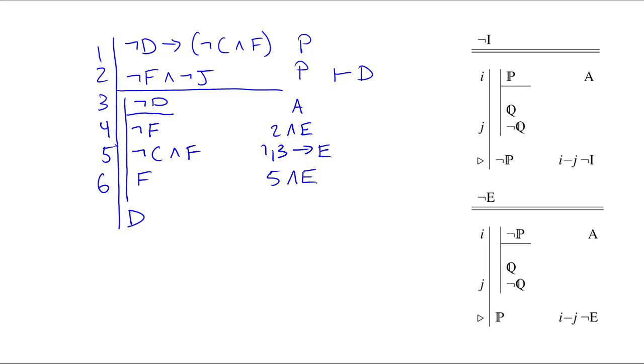Now, my Q and not Q are not right next to each other, but I very clearly have a contradiction in lines 4 and 6. So I can exit the sub-derivation, move out to the main scope line, and my justification for removing the hook from not D in line 3 is 3 through 6 hook elimination.